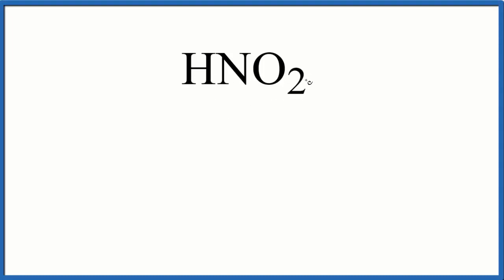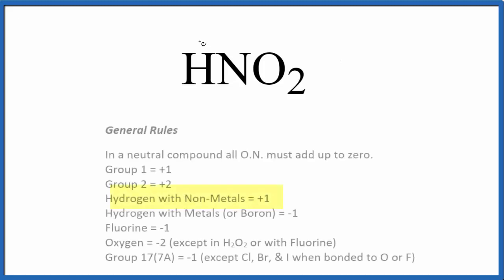We know that if we add up all the oxidation numbers here they're going to equal zero. This is a neutral molecule here. We don't have a plus or minus like we would after an ion. We also know hydrogen is plus one when it's bonded to nonmetals and oxygen is usually minus two with just a few exceptions.